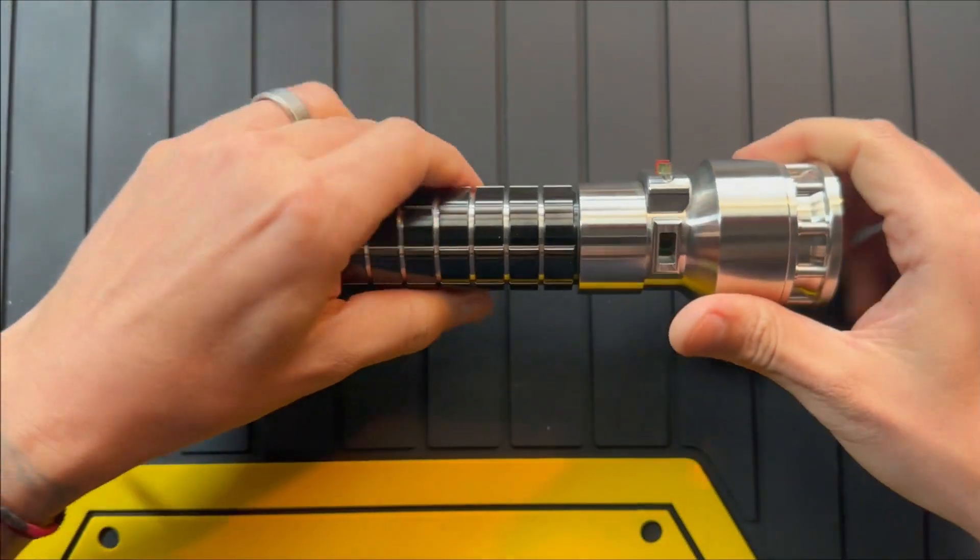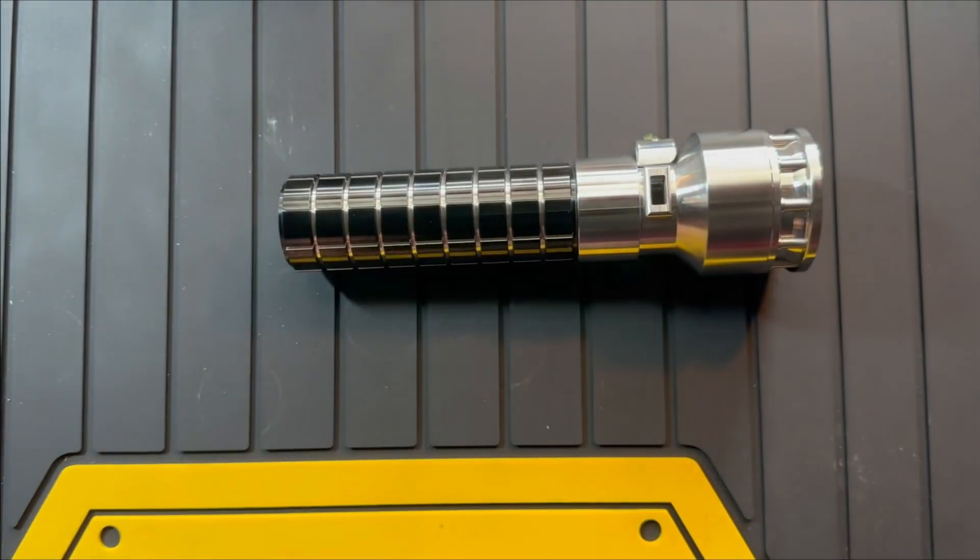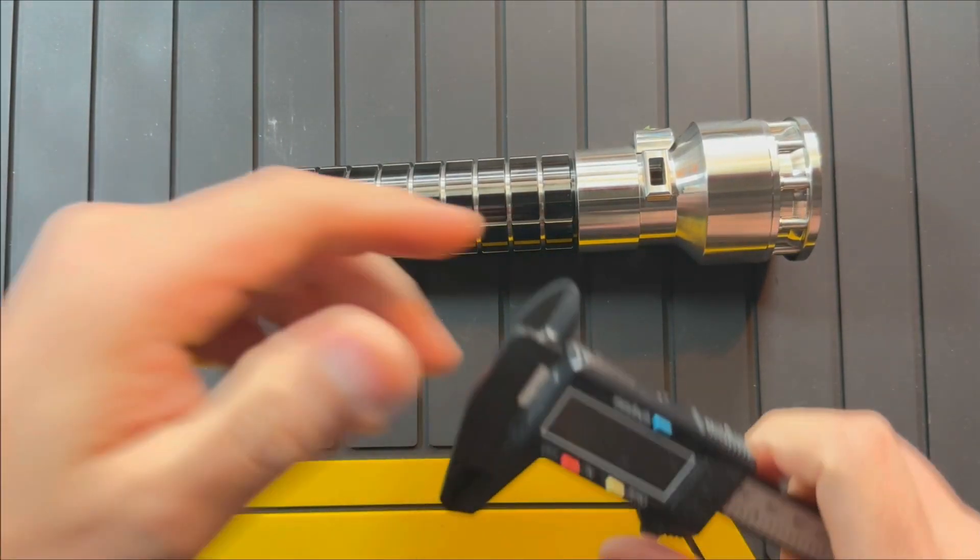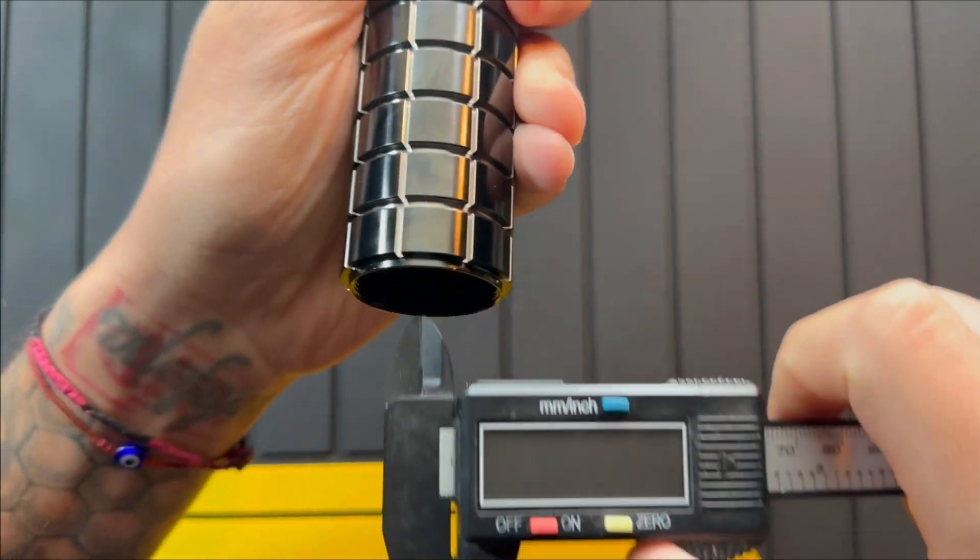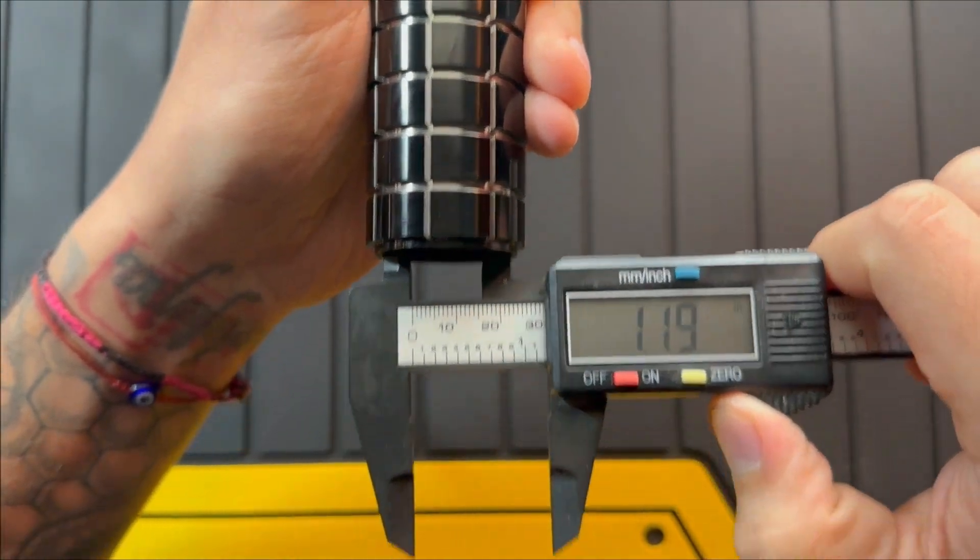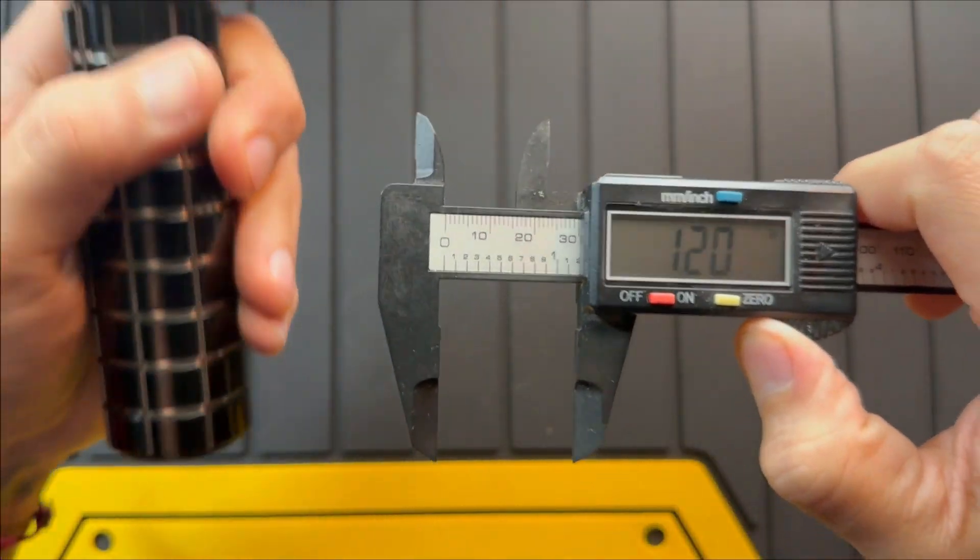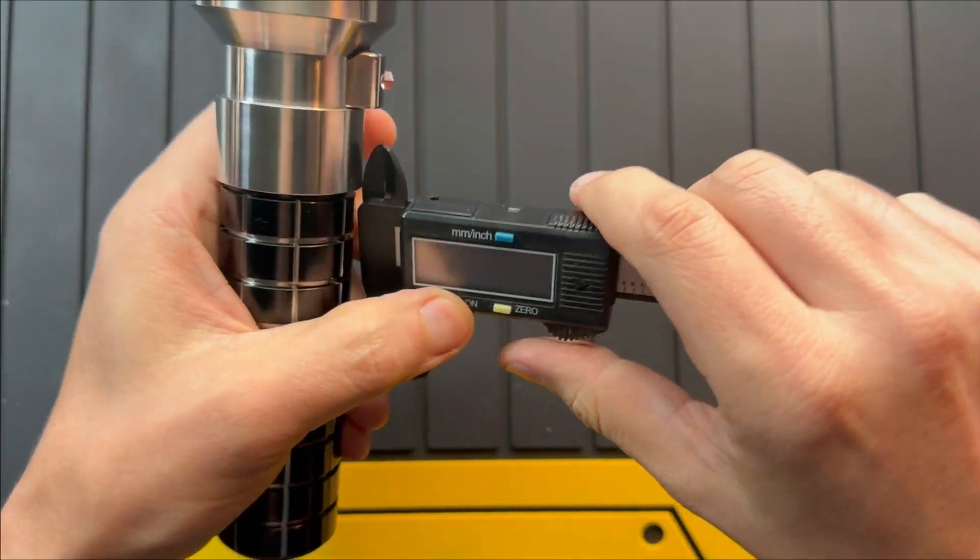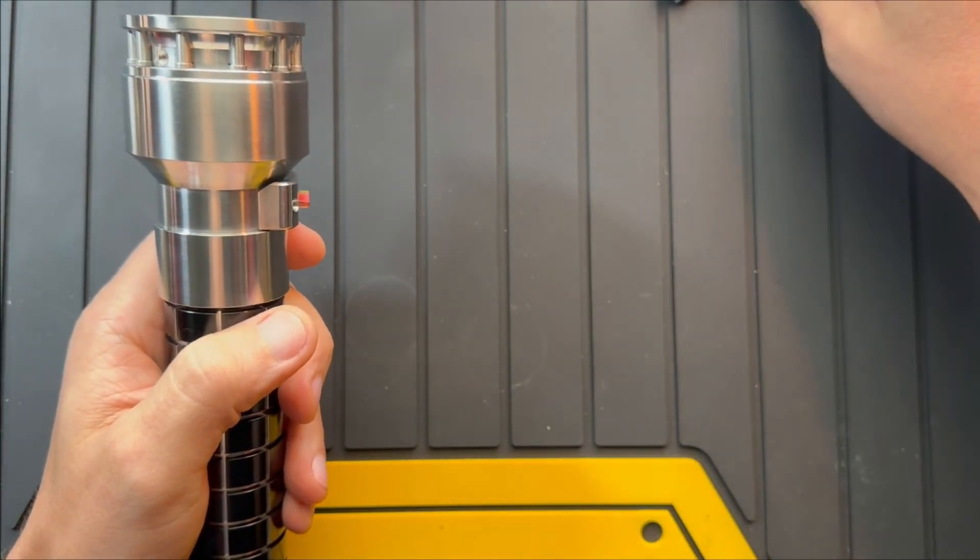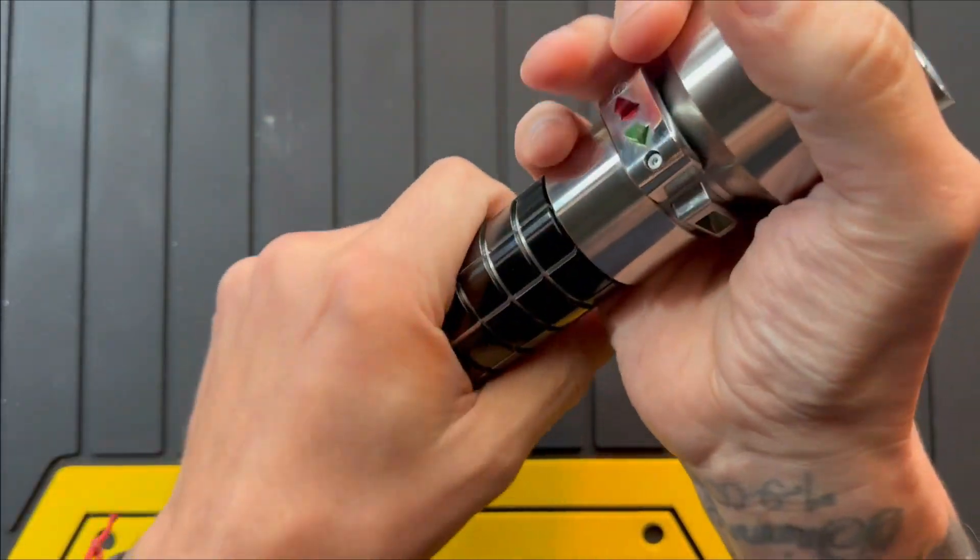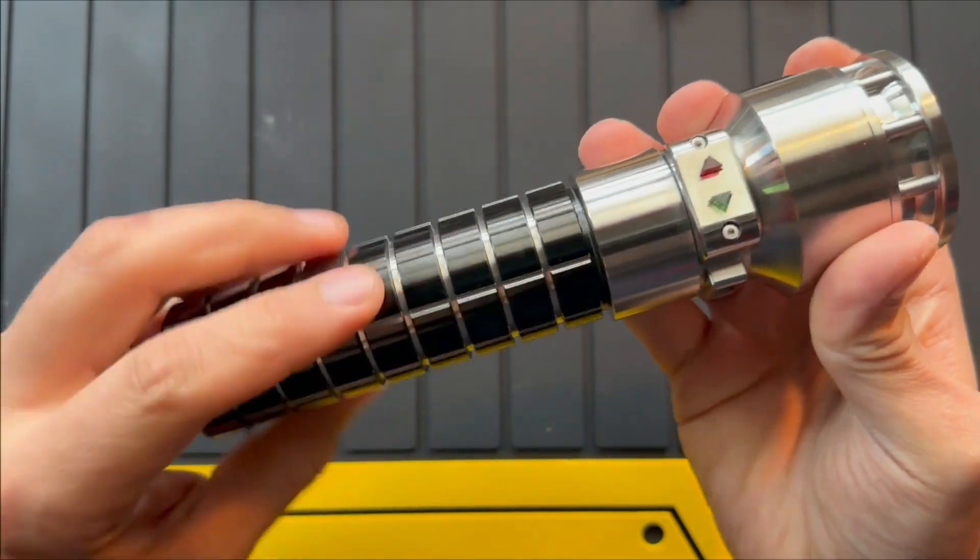Let me go get my calipers real quick. So we're looking at 1.2 inch internal diameter, so plenty of room for a fully enclosed 28 millimeter speaker. A 28 millimeter speaker is 1.1 inch diameter. And this handle comes off as well.